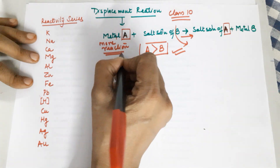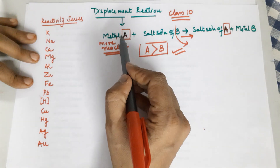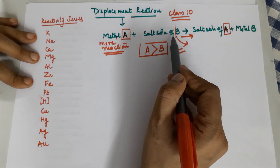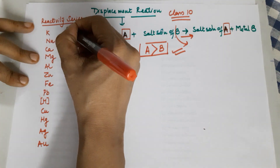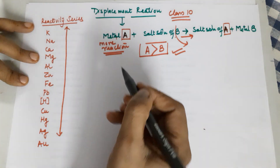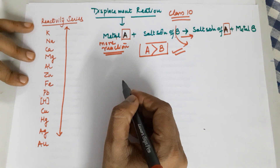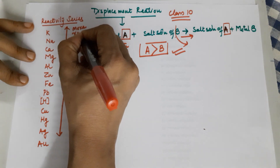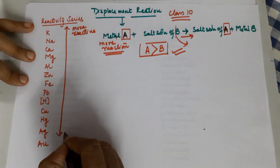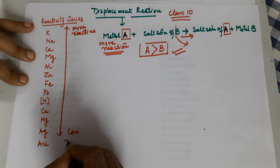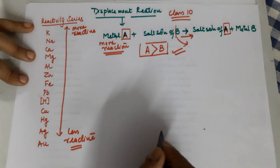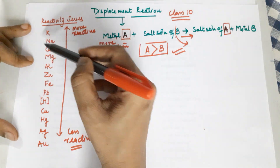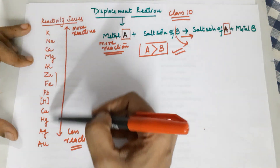The metal that you add into the salt solution should be more reactive. Your agenda would be to check whether the metal added is more reactive than the metal in the solution. You do that by means of the reactivity series. The metals on top are the more reactive metals while the metals at the bottom are the less reactive metals. If the top metals are added to the salt solution of the bottom metals, the reaction would happen.